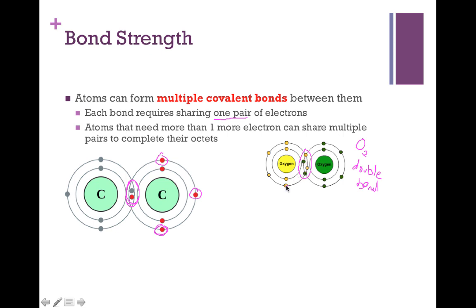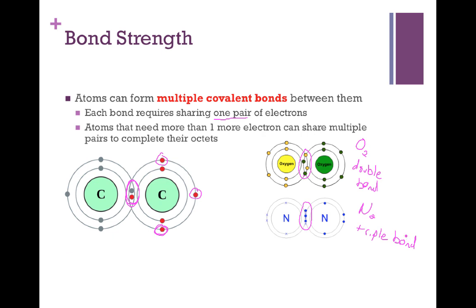This double bond is what these two atoms need to complete their octets — each atom now has eight electrons. We've achieved that goal, but in this scenario it required sharing two pairs of electrons. Taking that one step further, we can see the same example with nitrogen — N2, the other major gas that creates our atmosphere — where we share three pairs of electrons to create the nitrogen-nitrogen triple bond. The more covalent bonds we form, the stronger the bond between the atoms. The nitrogen-nitrogen triple bond is significantly stronger than the oxygen double bond or the carbon-carbon single bond, because of those multiple connections between the two atoms.